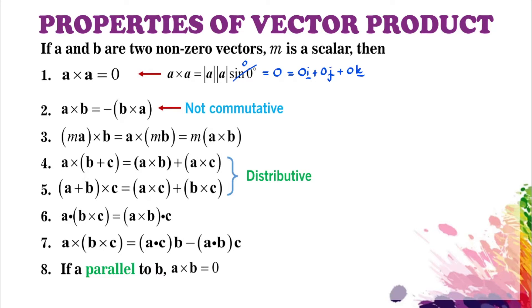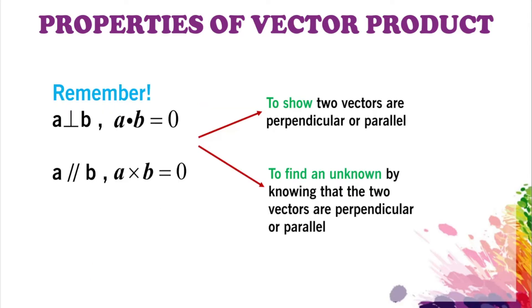By now you should know the properties for two vectors that are parallel or perpendicular. You need to apply these properties to show two vectors are perpendicular or parallel, or to find an unknown by knowing the two vectors are perpendicular or parallel. So now let's apply what we have learned in solving a few examples.